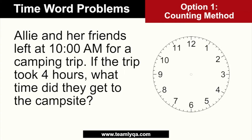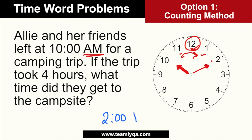Let's take a very simple question: Ali and her friends left at 10 a.m. for a camping trip. If the trip took 4 hours, what time did they get to the campsite? The idea of the counting method is you start at 10 o'clock a.m. I'm only concerned about the short hand on the clock. So I start at 10 and count 4 hours: 1, 2, 3, 4. The answer would be 2. But because you've passed 12, the AM becomes PM. So the answer is 2 o'clock PM.